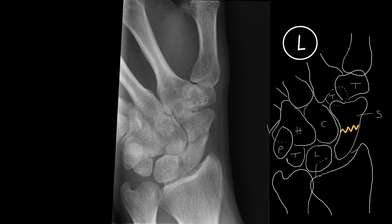The scaphoid is the boat-shaped bone on the radial aspect of the proximal carpal row. It articulates with the trapezium and the trapezoid, the capitate medially, and also the lunate inferomedially. There is also an articulation with the radius.